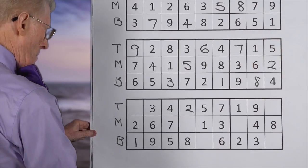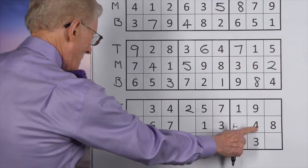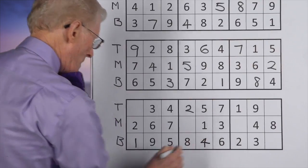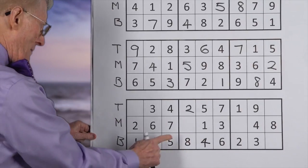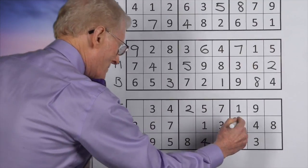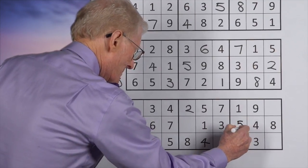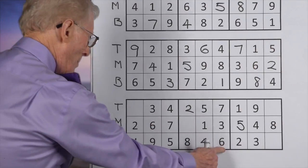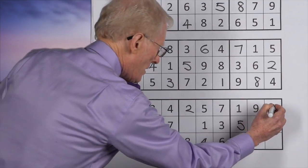Fours. We've got a top. We have a middle. In this block that doesn't have it, it has to be on the bottom. Okay. Fives. We have a bottom, top. It has to be in the middle. On this one that doesn't have a five. Sixes. We have a middle. We have a bottom. It has to be over here on top. On the top.